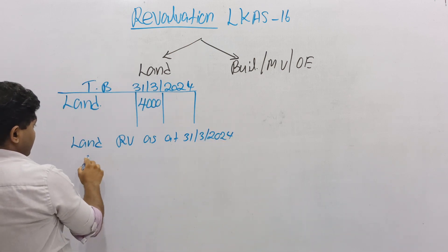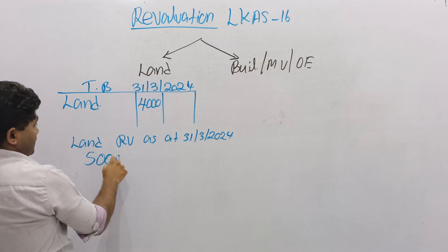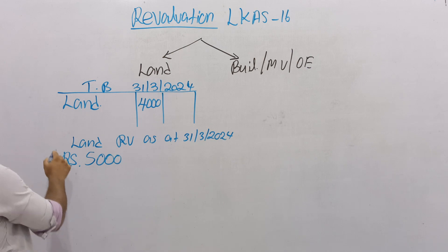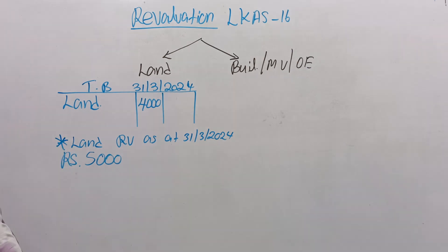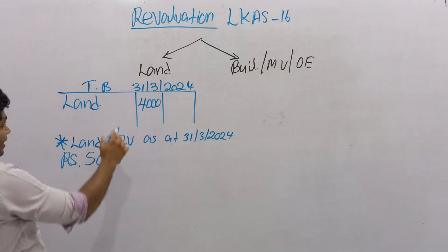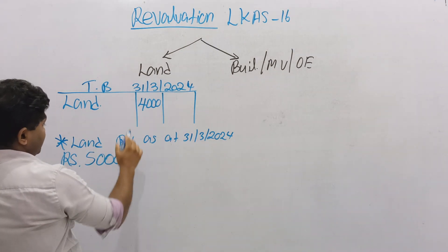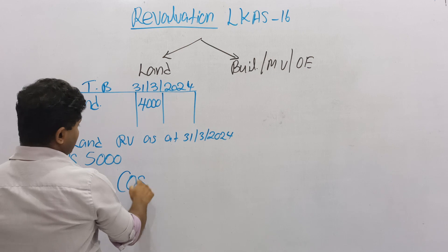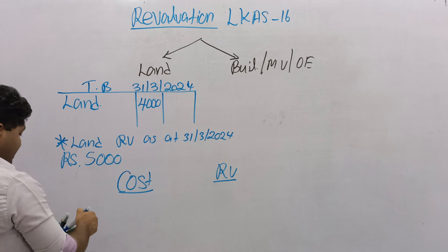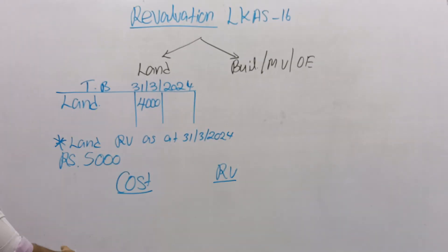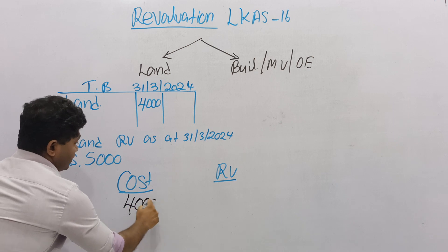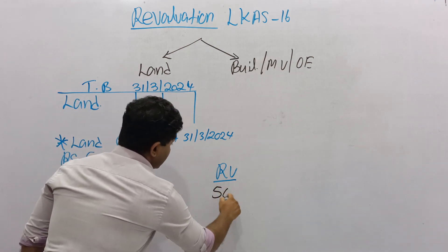Think the revaluation amount equals 5000. This is an adjustment — it has not been revalued yet, not recorded yet. Since land is a non-depreciable asset, you have to compare the cost value with the revaluation amount. Think cost value equals 4000 for land, but the given revaluation amount equals 5000.